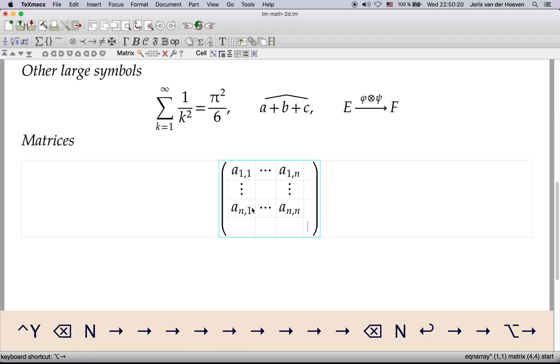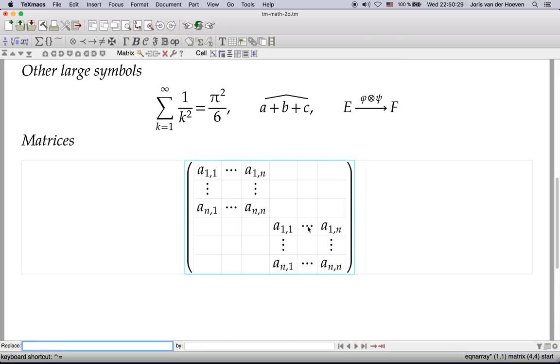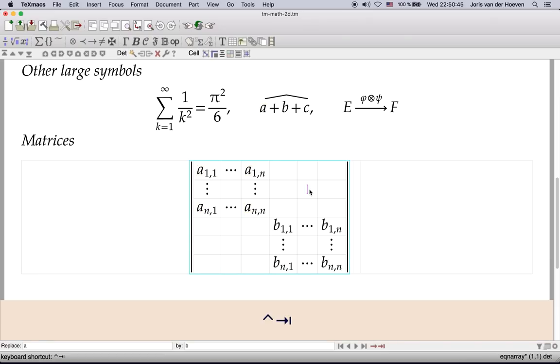One may even copy sub-matrices. We're now going to replace the A's by B's. We may also use Structured Variants again, Ctrl-Tab, to turn our matrix into a determinant.